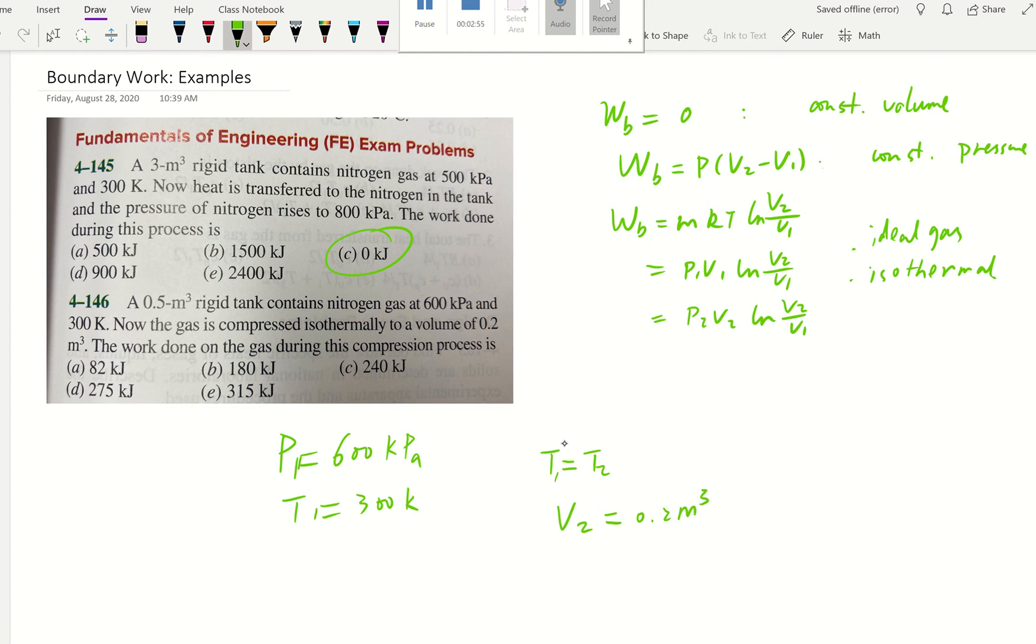Notice that the gas is compressed isothermally, which means temperature is going to be constant. To a volume V2 of 0.2 meter cube. So originally the volume is 0.5 meter cube. You might wonder, they said it's rigid tank and the volume can be changed. Yes, I wonder the same thing. I think maybe it's a choice of words. But whenever you see the volume actually changed, then we know it's no longer a constant volume. They ask us to find the work done during this compression process.